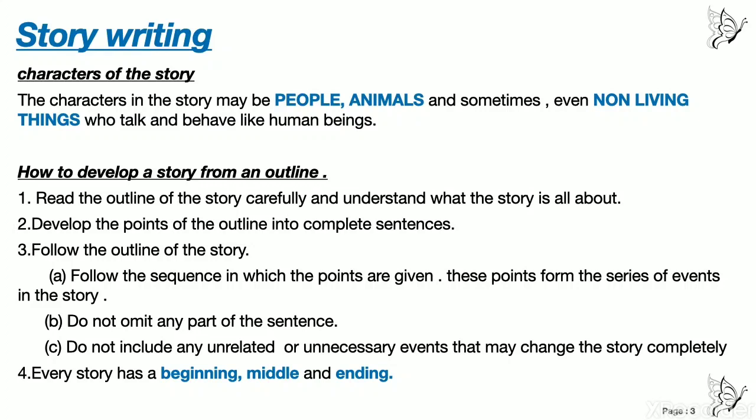Next point: how to develop a story from an outline. Number one — read the outline of the story carefully and understand what the story is all about. First you have to read the outline and understand. Don't just simply look and then start writing — first read and then understand what is written. Number two — develop the points of the outline into complete sentences. The outline has after every two or three words a dash, and that doesn't make any sense on its own. You have to make those phrases into meaningful and complete sentences. These are the main points which are given.